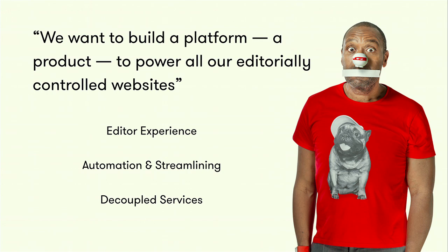The first one is the editorial experience. Editorial experience is very important because we want to build a tool that allows our editorial team to build a compelling website with different landing pages for our different audiences. But we also want to make sure that we automate and streamline this process. We want to build a product that we can iterate upon with a semantic versioning system behind it, so we can know which website runs which version of the codebase.